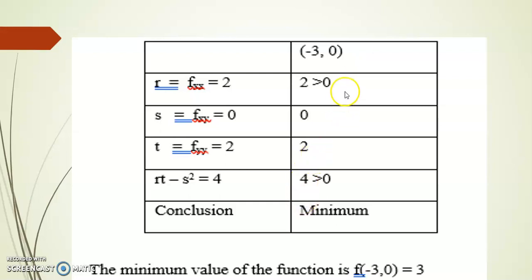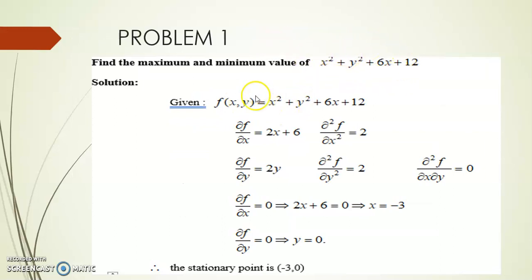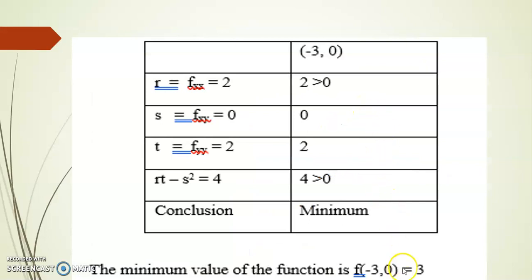Substituting x = -3 and y = 0 into f(x,y) = x² + y² + 6x + 12: (-3)² = 9, y² = 0, 6×(-3) = -18, plus 12. So the minimum value is 9 + 0 - 18 + 12 = 3.